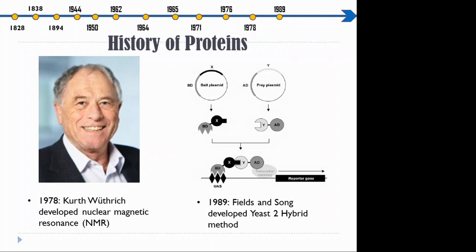In 1989, the first experimental method to determine PPI was developed by Fields and Song. It was called the yeast two-hybrid method.